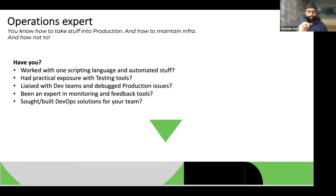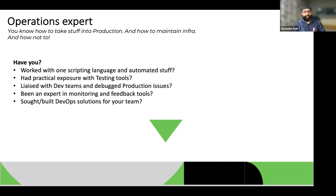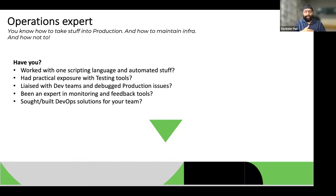If you're in the operations area, your strength is knowing what it takes to make production work — and what it takes to break it. Ask yourself: do you know at least one scripting language and have you automated something with it? Have you had exposure to testing tools — application, infrastructure, or network? Have you liaised with the development team to debug production issues, looked at monitoring tools, or worked with the DevOps team to create solutions?